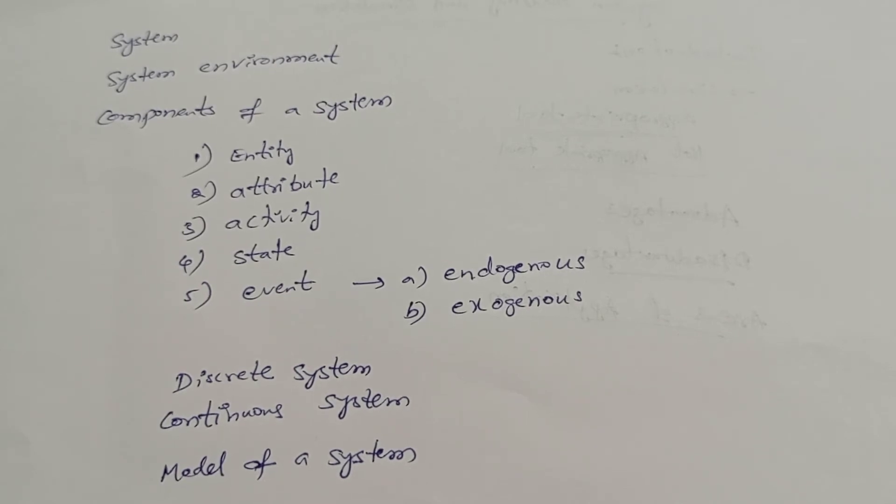For example, take again a two-wheeler. We are taking some collection of variables, the color of a bike and which company of that bike. These are all the state.